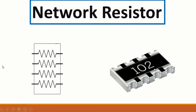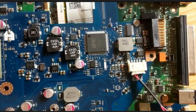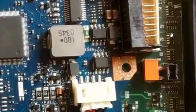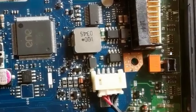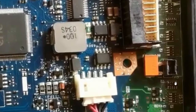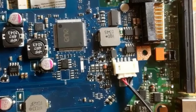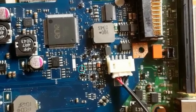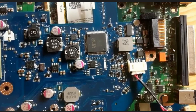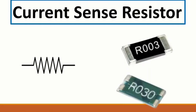Here we have '10' with two zeros after it, meaning 1000 ohms. Let's see the motherboard for network resistors - here we have network resistors, and also here. This network resistor is a combination of four resistors. Some have four or five resistors combined. The purpose of these network resistors is to minimize and save space on the motherboard.